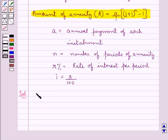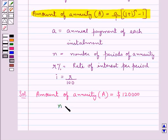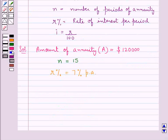So first of all we have the amount of annuity in this case given by capital A is $120,000. Then n that is the number of periods of annuity is 15. R percent is equal to 7% per annum and so we can calculate i as r upon 100 equal to 7 upon 100 and so this is equal to 0.07.